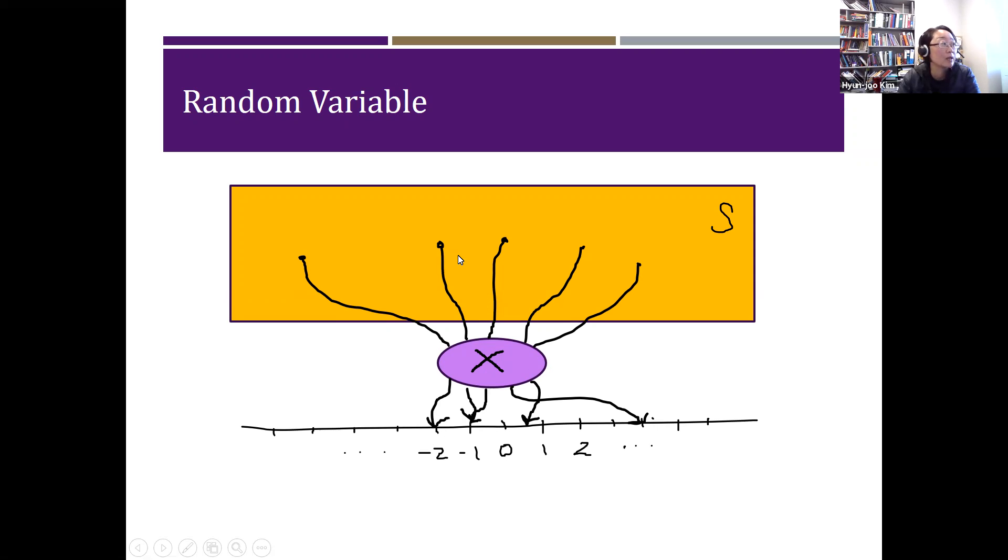So the first one becomes negative 2, the second one becomes negative 1, the third one becomes negative 1, and the fourth one was actually somewhere here, like 4. And then the fifth one is somewhere between 0 and 1 or something like that.